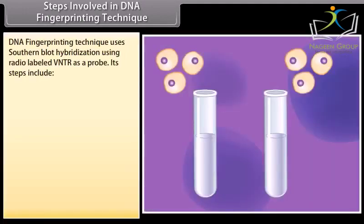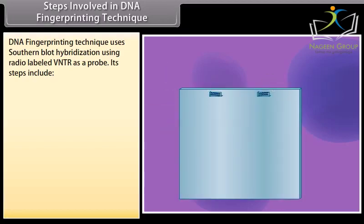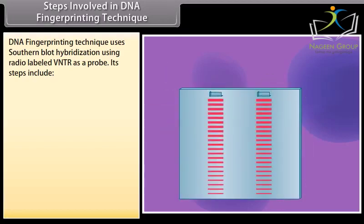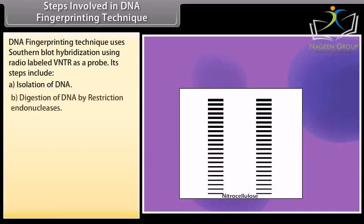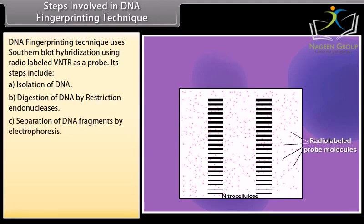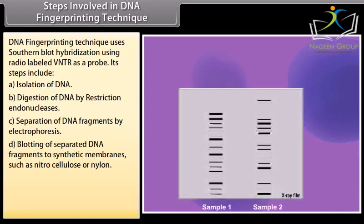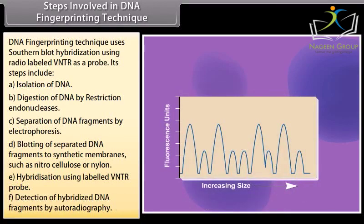DNA fingerprinting technique uses Southern blot hybridization using radio-labeled VNTR as a probe. Its steps include: A) isolation of DNA, B) digestion of DNA by restriction endonucleases, C) separation of DNA fragments by electrophoresis, D) blotting of separated DNA fragments to synthetic membranes such as nitrocellulose or nylon, E) hybridization using labeled VNTR probe, and F) detection of hybridized DNA fragments by autoradiography.